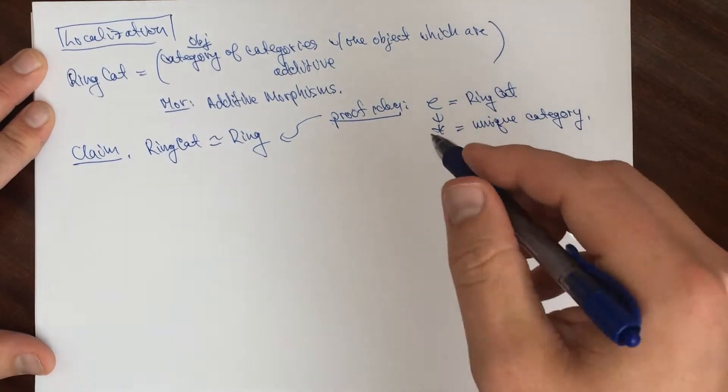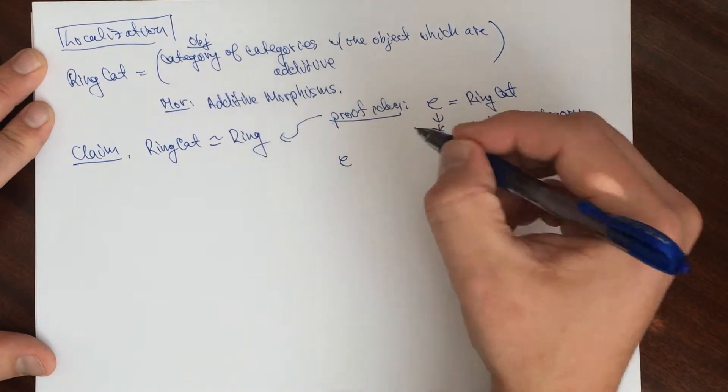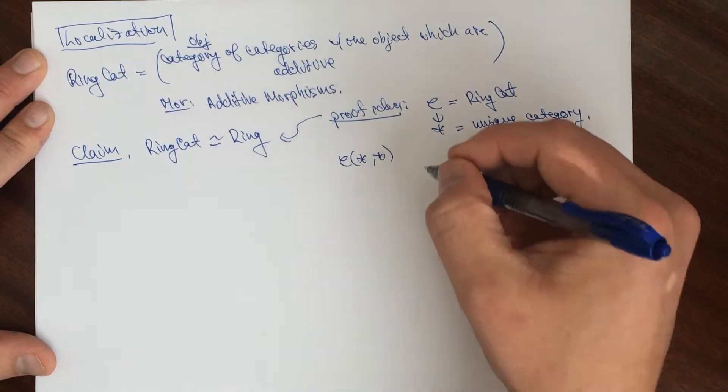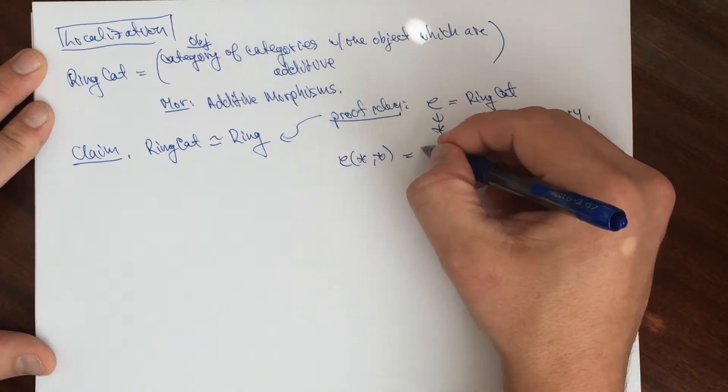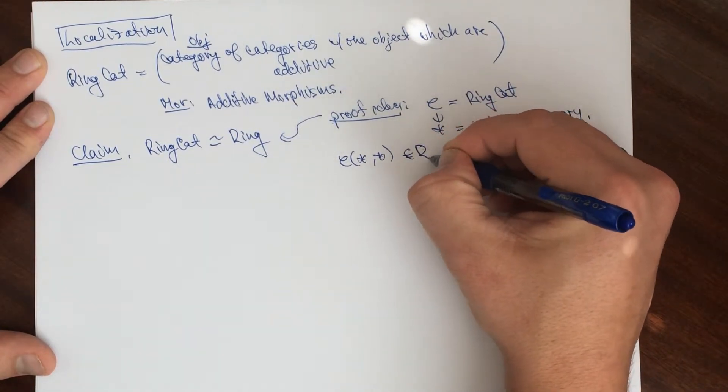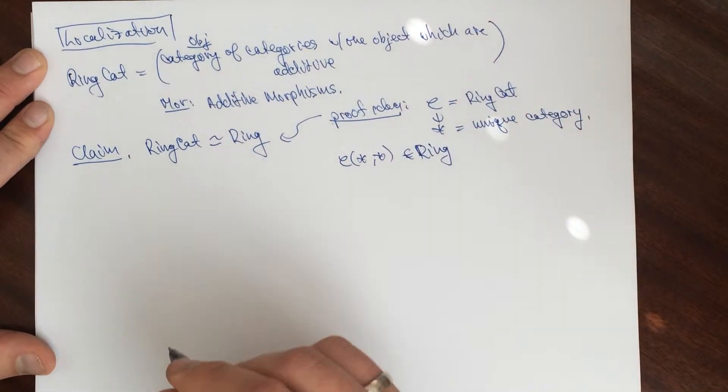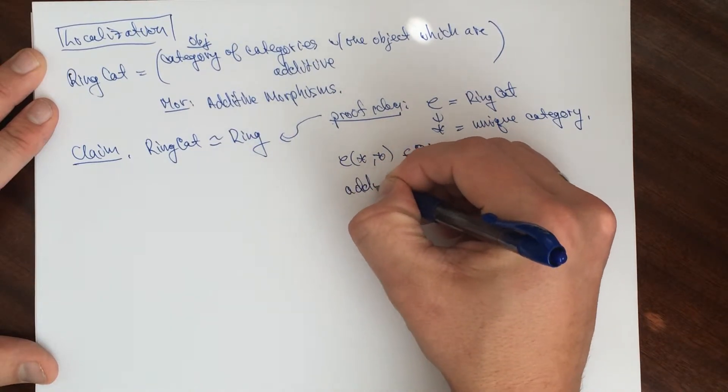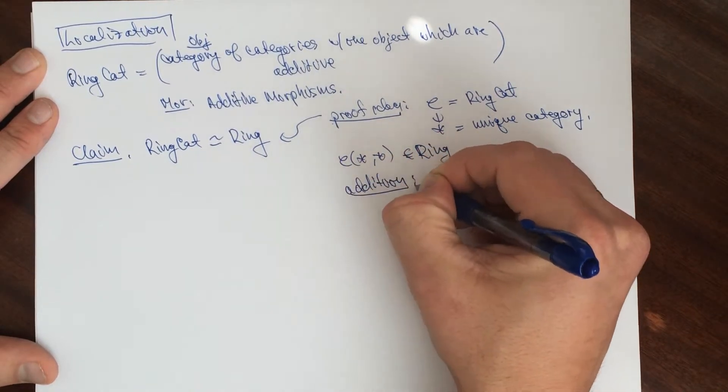Then I claim that HOM, remember I write HOM is C, this is HOM from this to itself. So this is a ring. This is in the category of rings. Let's see what things go. We already know it's an additive category.